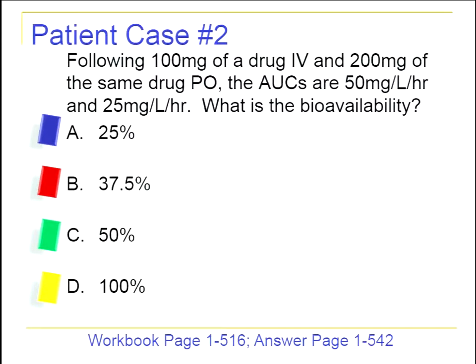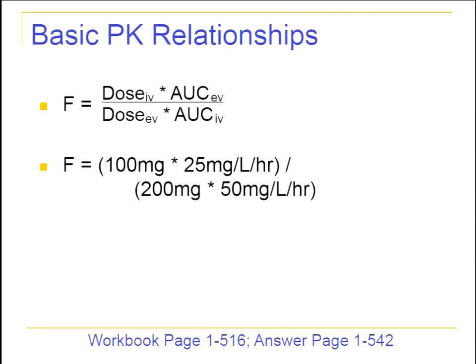This next question is straightforward — calculating bioavailability. Following 100 mg of a drug IV and 200 mg of the same drug orally, the AUCs are 50 after the IV and 25 after the oral dose. Bioavailability equals (dose IV × AUC extravascular) divided by (dose extravascular × AUC IV). Plugging in: (100 × 25) divided by (200 × 50) gives a bioavailability of 25%. The correct answer is A.